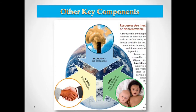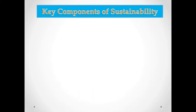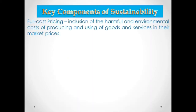Now let's go to some other key components. We can have an economic key component, a political key component, or an ethical key component. For economic key components, we have full cost pricing. Full cost pricing is the inclusion of the harmful environmental costs of producing and using goods and services in their market prices.